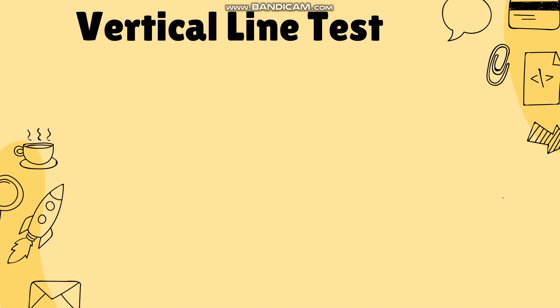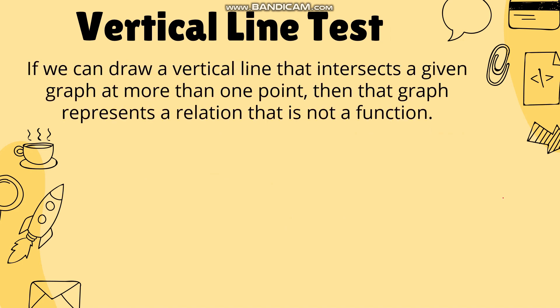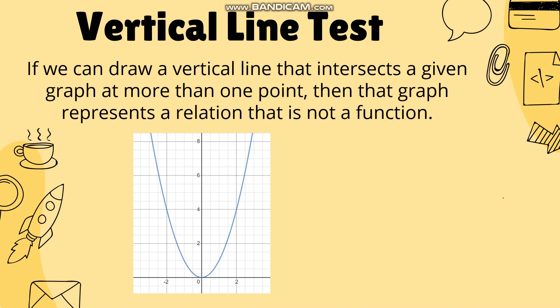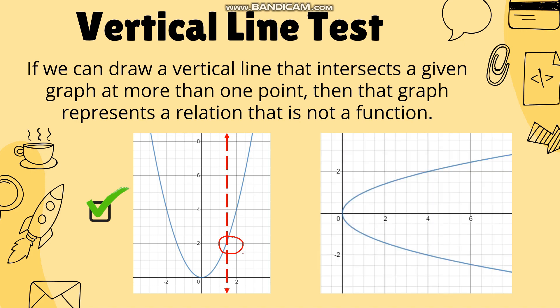We also have the vertical line test to check if a given graph represents a function. If a vertical line intersects the graph at more than one point, then the graph represents a relation that is not a function. For example, a parabola opening upward passes the vertical line test if the line touches it at exactly one point. But if the vertical line touches the graph at two points, it fails the test and is not a function. That's it for today — I hope you learned something about the kinds of functions and the difference between relations and functions.